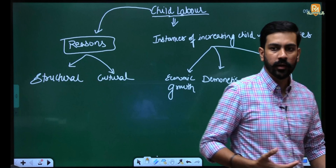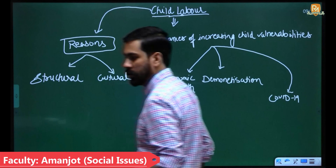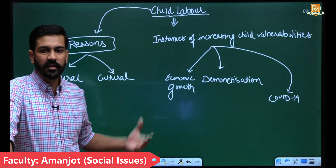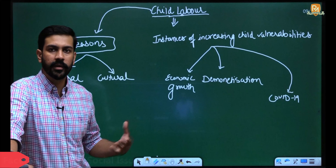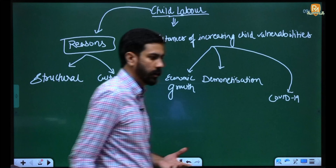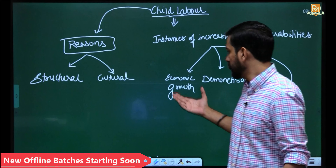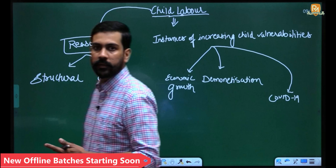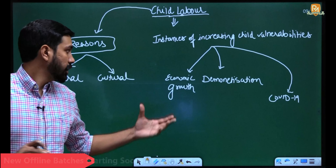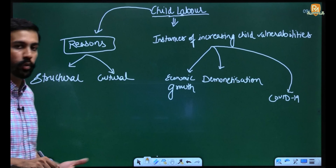Hello everybody, welcome to the Explained Series from Rajmulotra IAS Academy. Today's issue will be increasing instances of child labor that are being witnessed in the aftermath of recent events over the past two to three years — the downward trend in economic growth that is having an adverse impact specifically on the manufacturing sector.